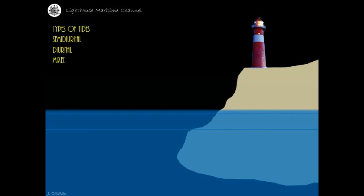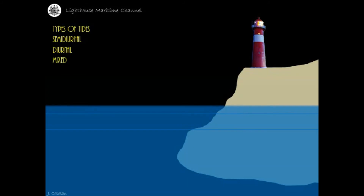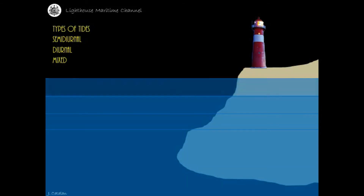Mixed: in this type of tide, the diurnal and semi-diurnal oscillations are both important factors. The tide is characterized by a large inequality in the high water heights and low water heights, or in both. There are usually two high and two low waters each tidal day, but occasionally the tides may become diurnal.